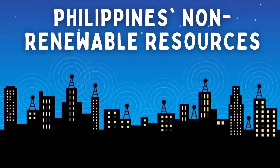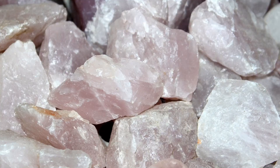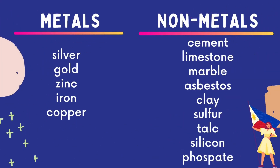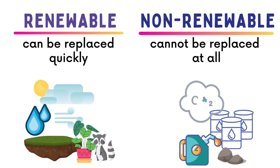The Philippines has its own non-renewable resources. Our country is very rich in minerals such as metals and non-metals. Some examples of metals which can be found here are silver, gold, zinc, iron, and copper, while the non-metals are cement, limestone, marble, clay, sulfur, and others. Here are the differences between renewable and non-renewable resources.